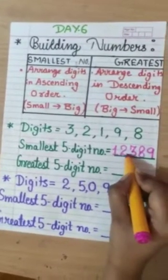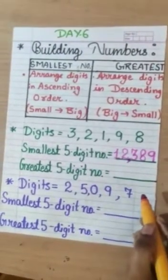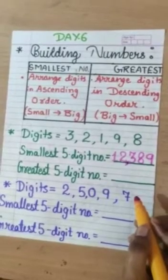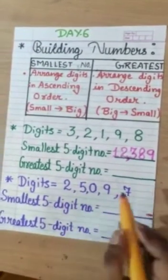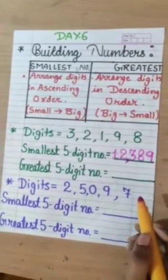And let's put the comma, so that we can read our number which is 12,389. Now, let's make the greatest 5 digit number.